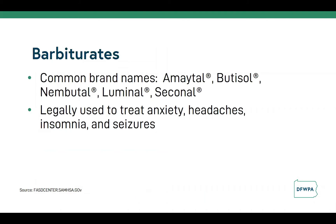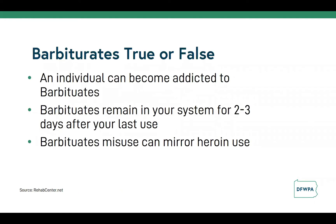Barbiturates are another type of depressant — like a sedative. Barbiturates are available in oral form and are typically misused through ingestion. But to get a quicker onset of the drug's effects, some individuals choose to inject the drug directly into their veins, and it can look a lot like heroin use. The majority of individuals who develop an addiction to barbiturates obtain them through a personal prescription or from someone they know.